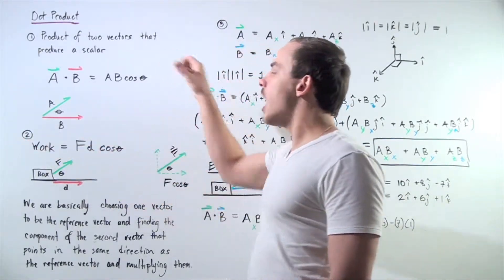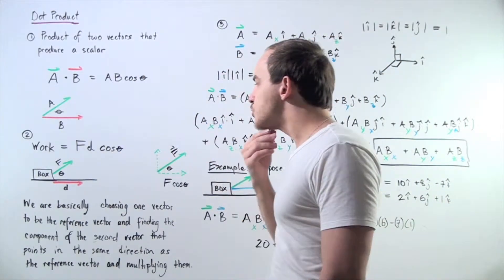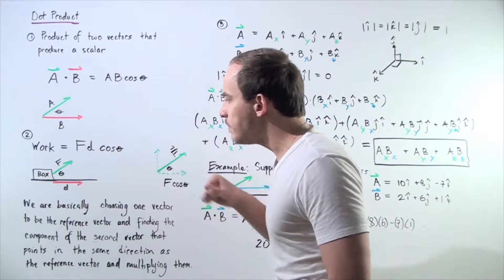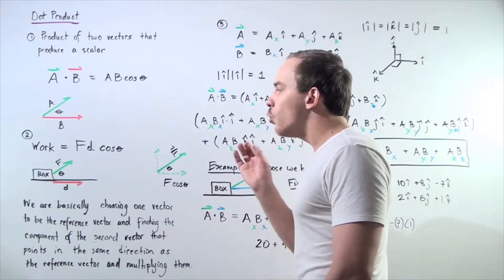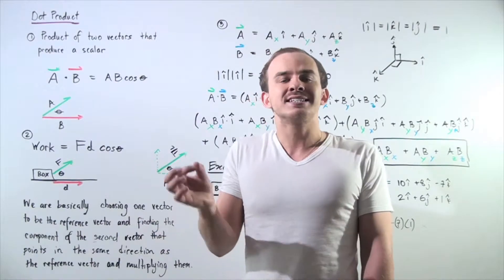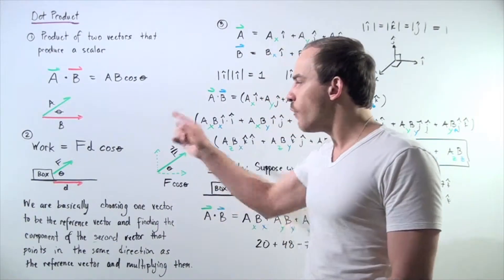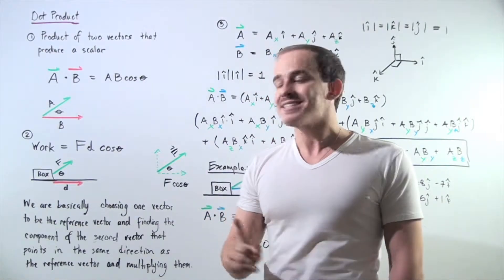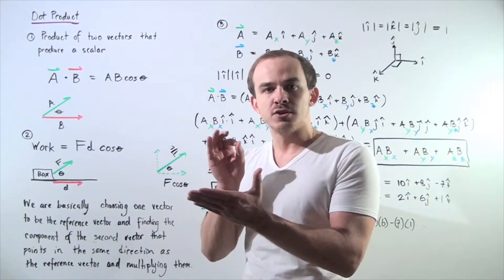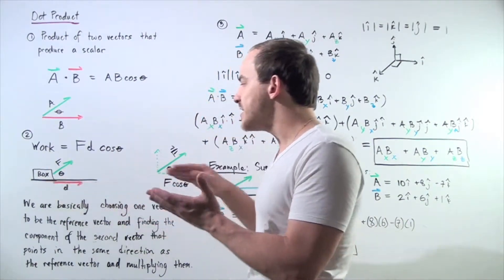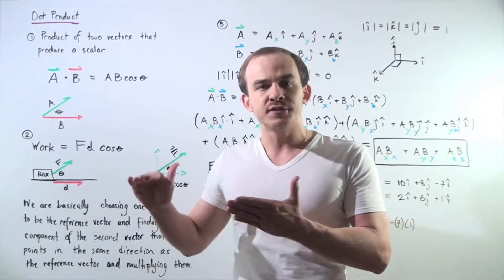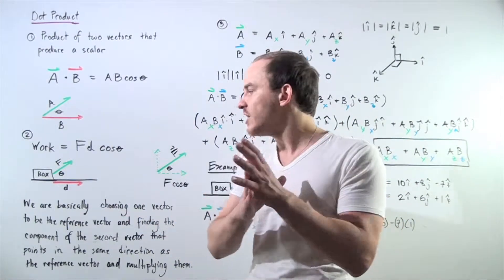So this is one example of dot product. What we're essentially doing is choosing one vector to be the reference vector. In this example, when we are calculating the work, we choose our displacement to serve as the reference vector. Then we're trying to find the component of the force vector that points in the same exact direction as the reference vector, our displacement vector.